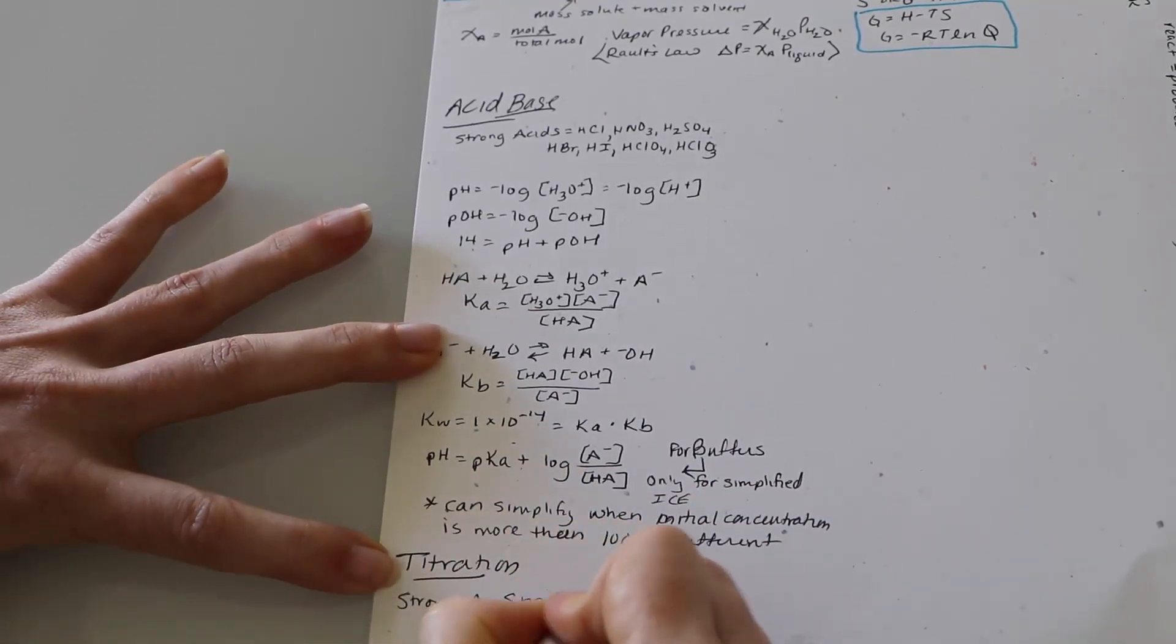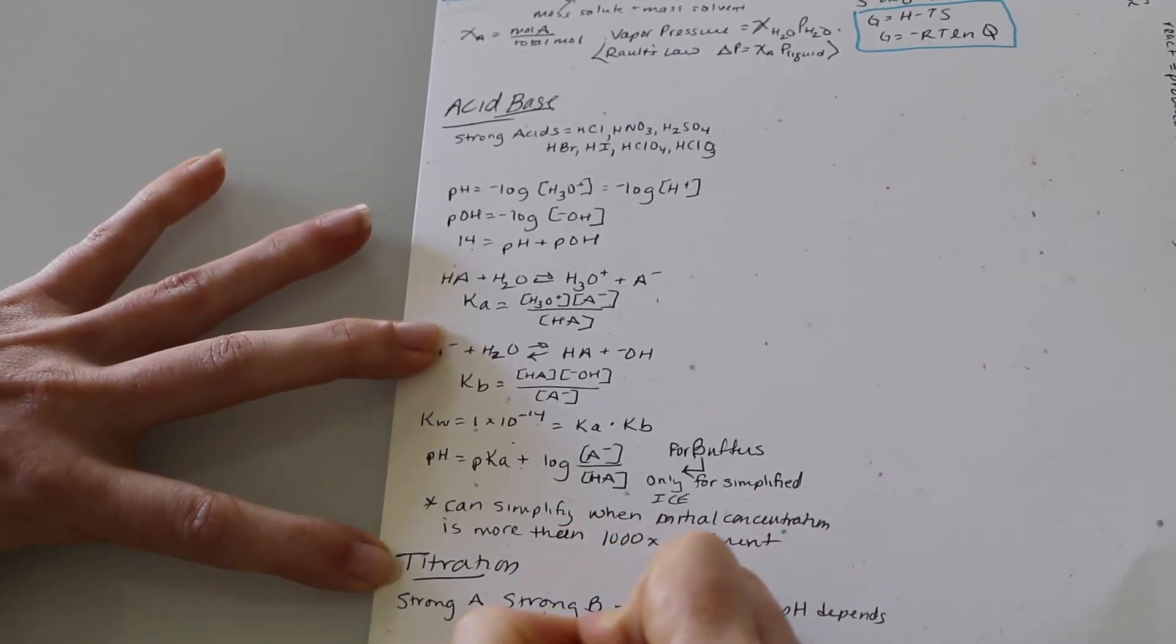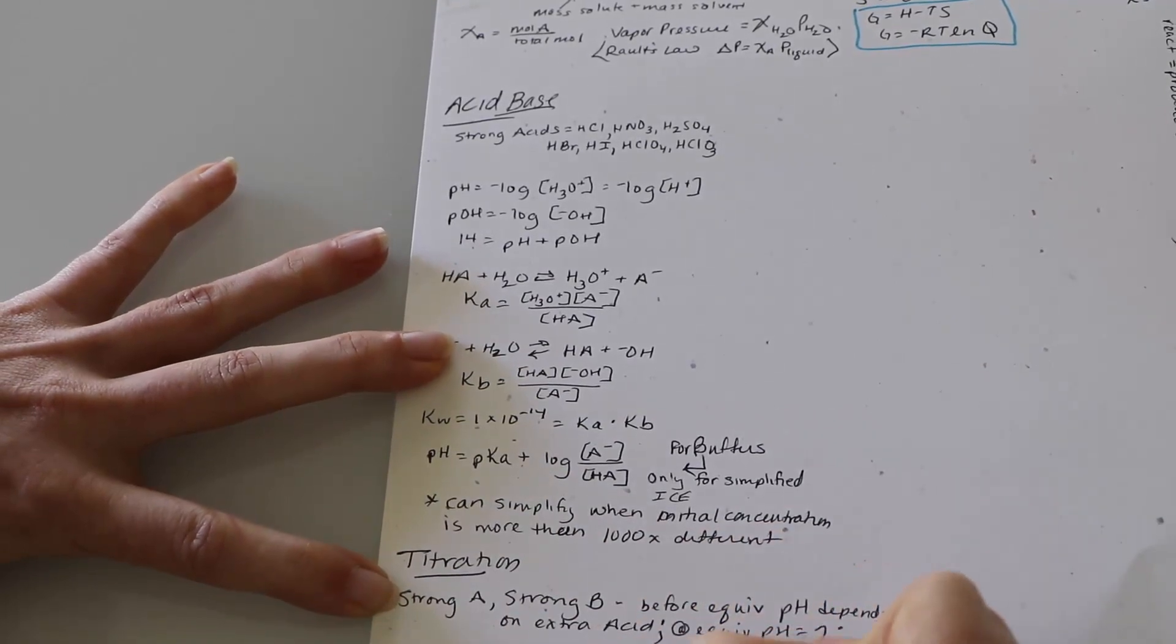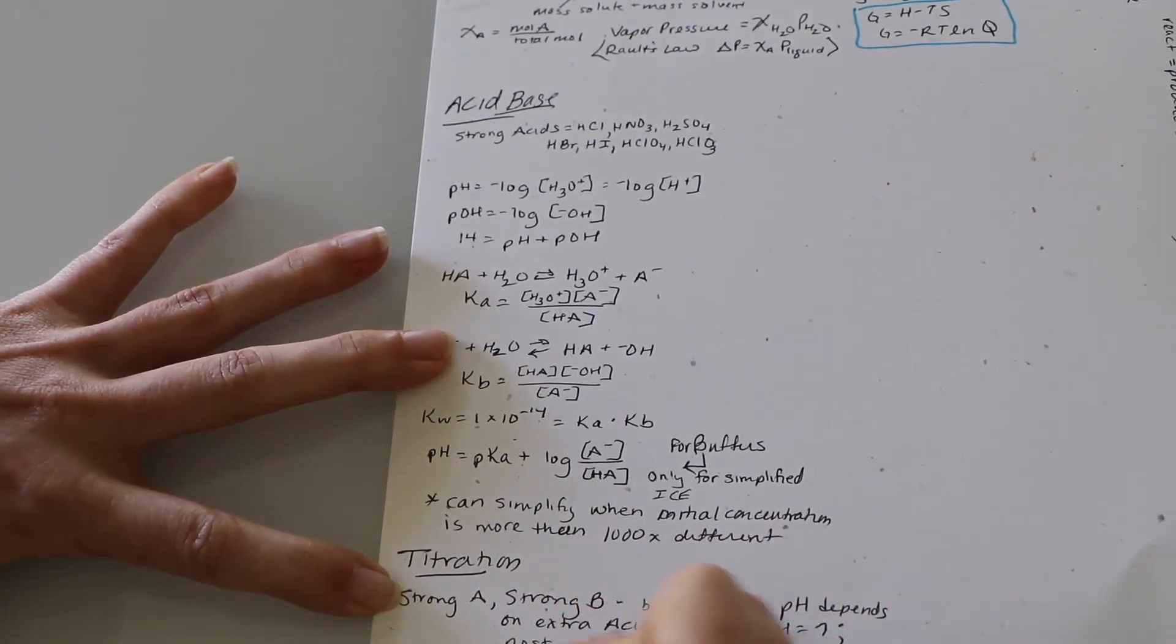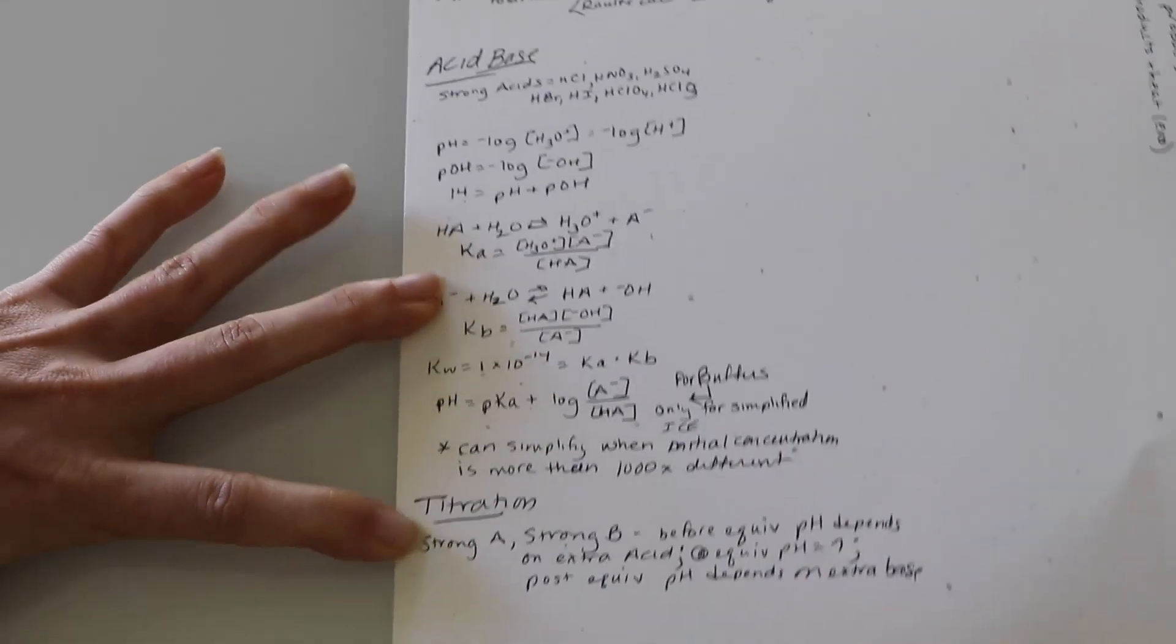So the quadratic equation would be a really good thing to write down if you don't have that programmed into your calculator. You will have access to a quadratic equation solver through Respondus. There will be a link at the top of the final exam.